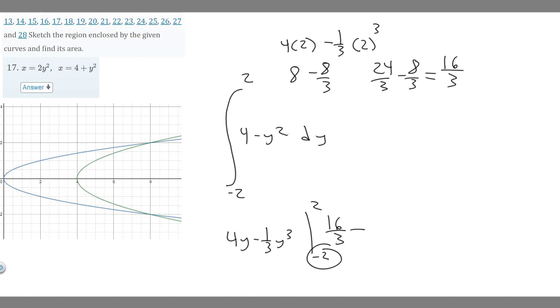Now we subtract the value when -2 is plugged in: 4(-2) - ⅓(-2)³ = -8 - ⅓(-8) = -8 + 8/3.